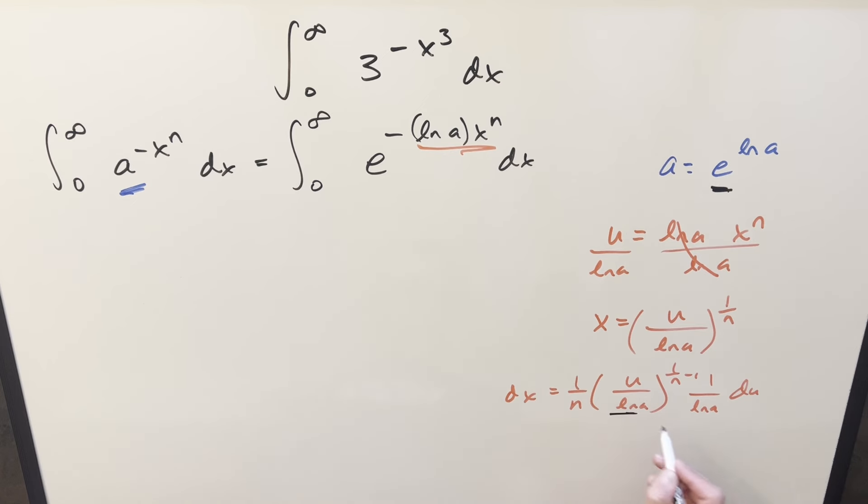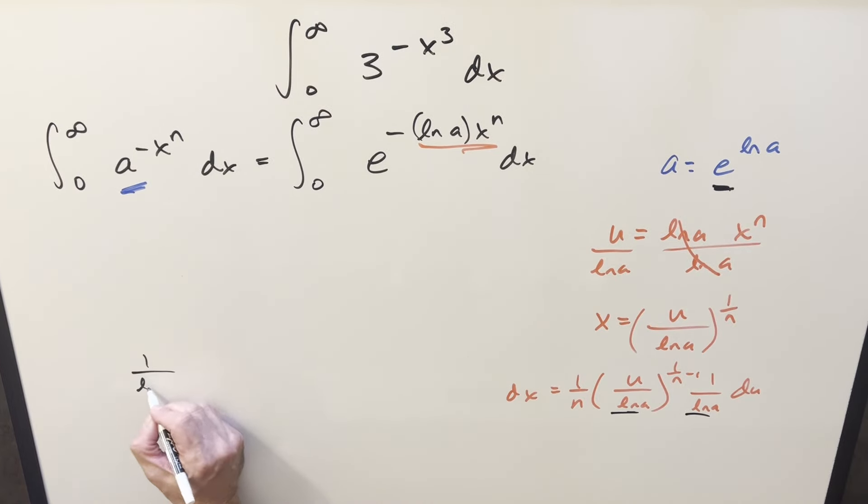But before we substitute, let's see if I can clean it up a little bit, just consolidating these ln a's. So I think, so if I break that out separately as 1 over ln a to the 1 over n minus 1 times 1 over ln a, then exponent properties, we add these together and we get 1 over ln a to the 1 over n. So then I'll rewrite this dx value as 1 over n. I'm going to split everything up and I'm going to split this u out separately. So we'll have u to 1 over n minus 1, and then we'll have this stuff, 1 over ln a to the 1 over n du.